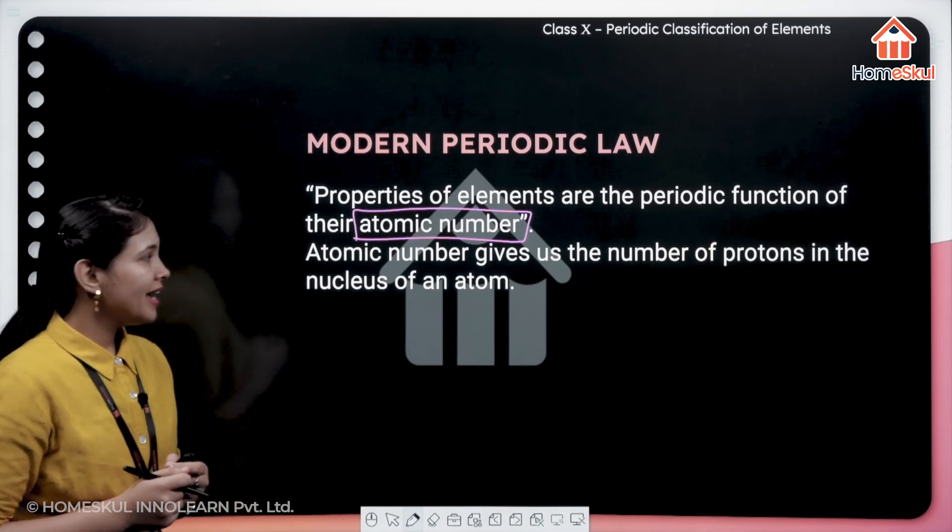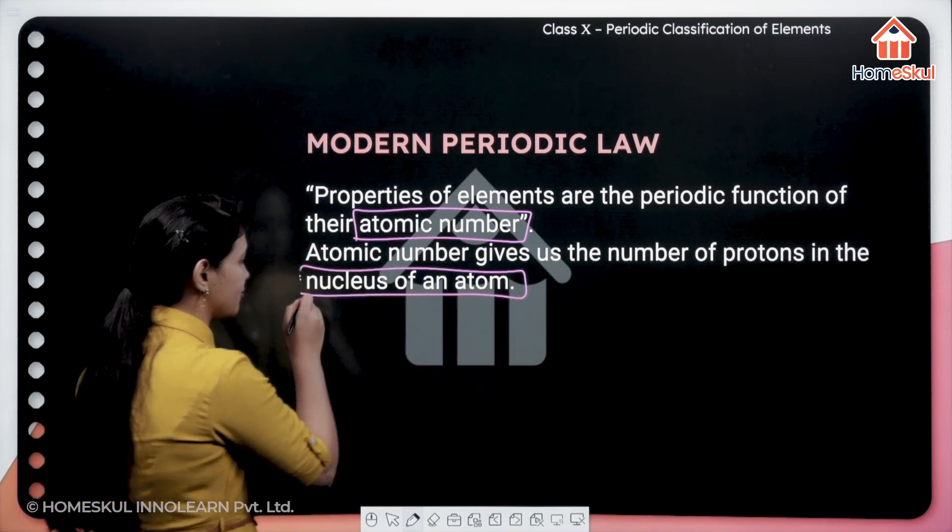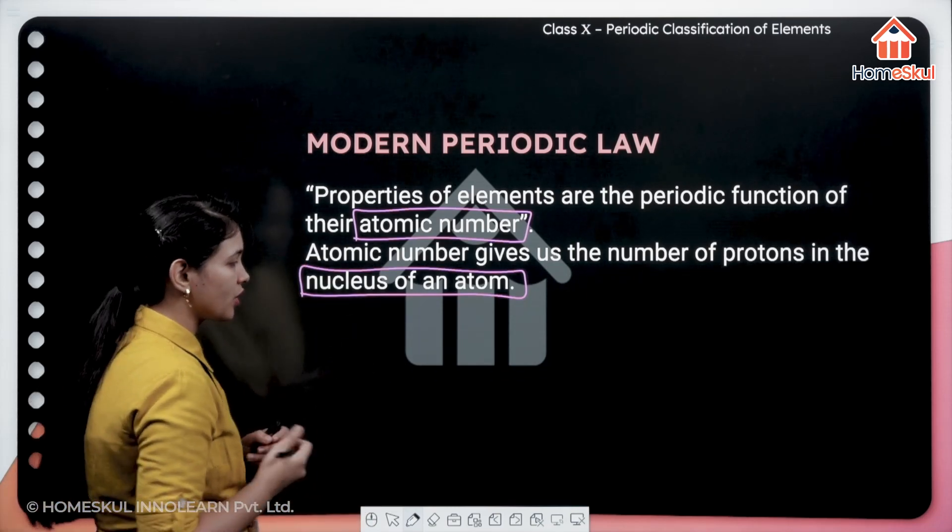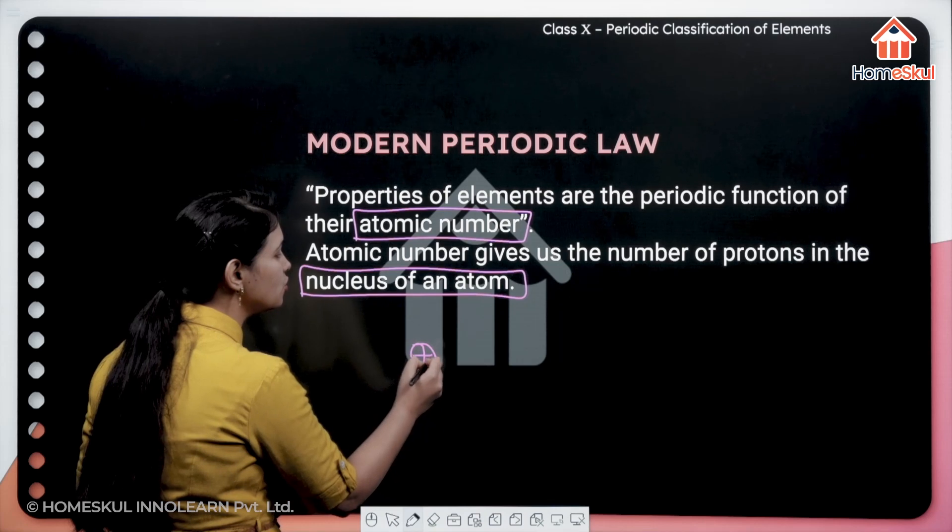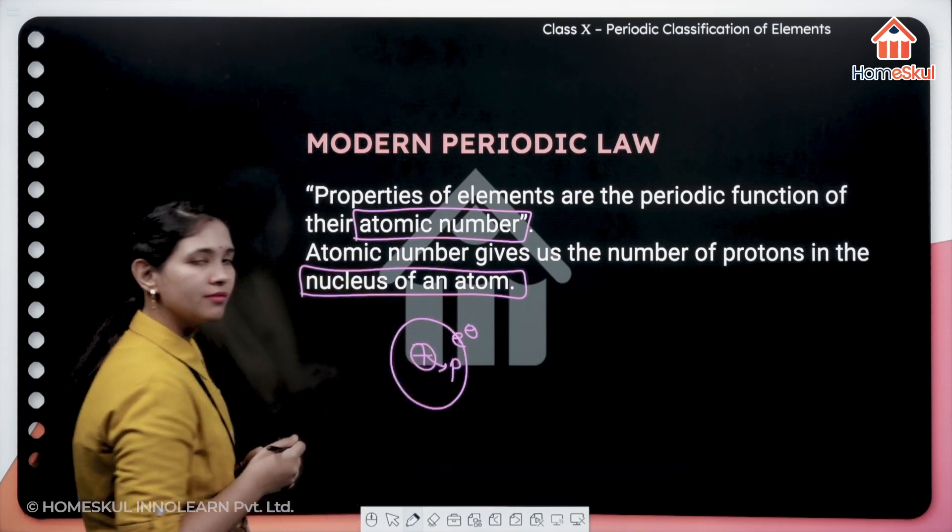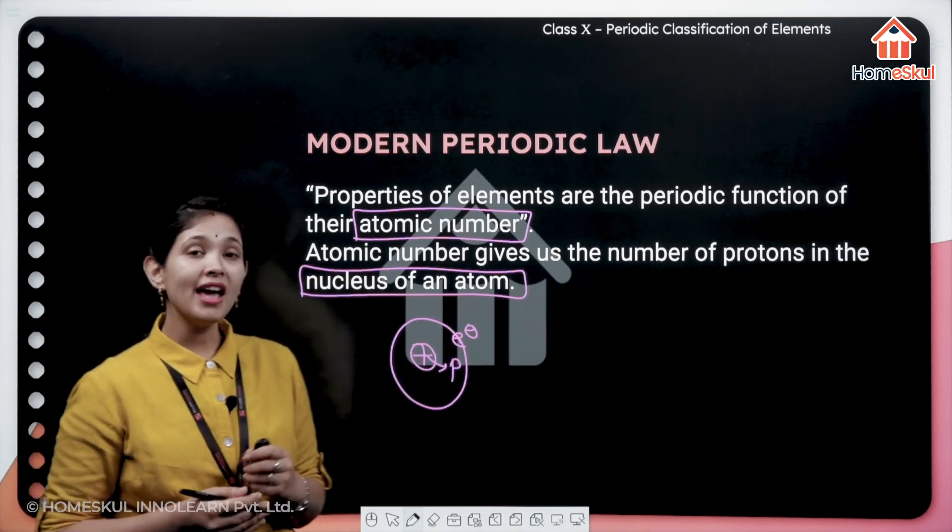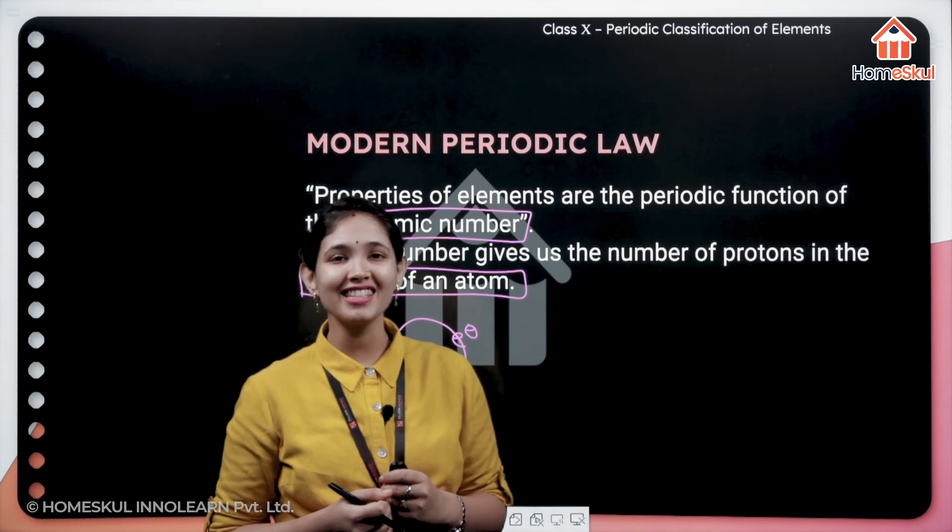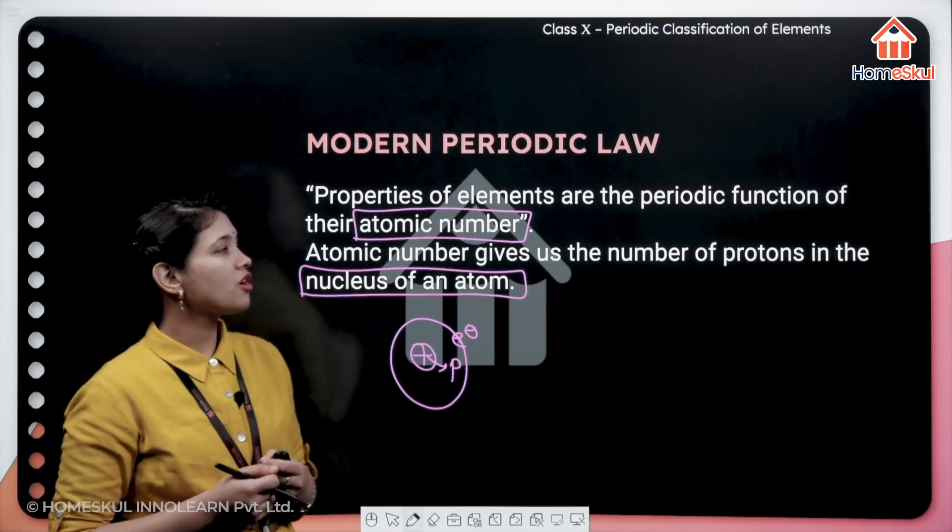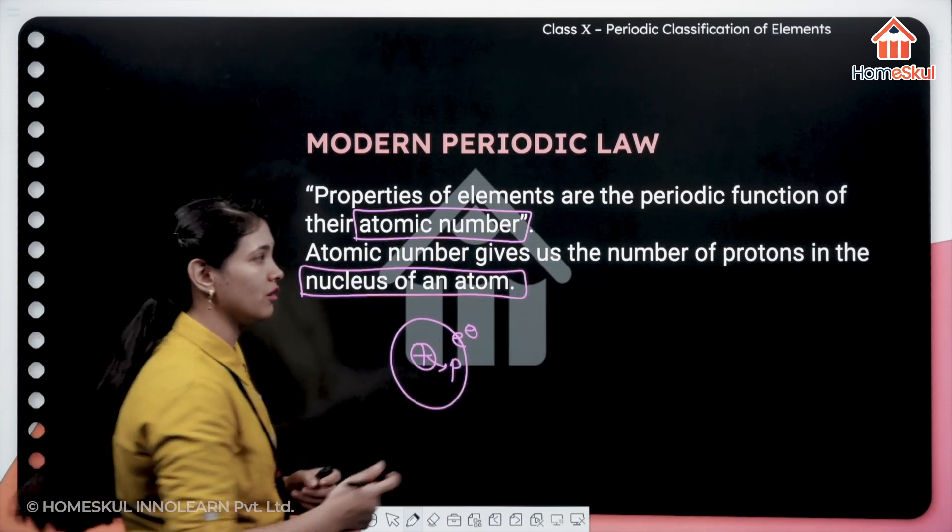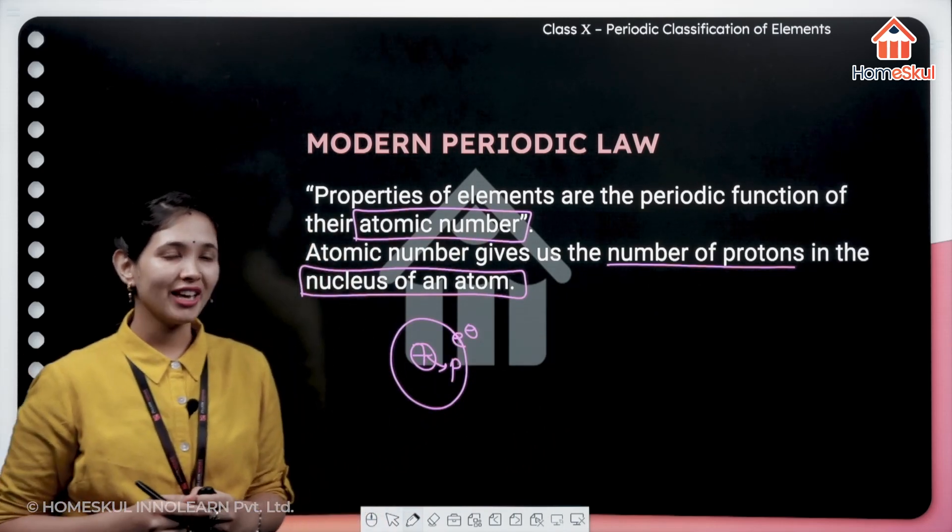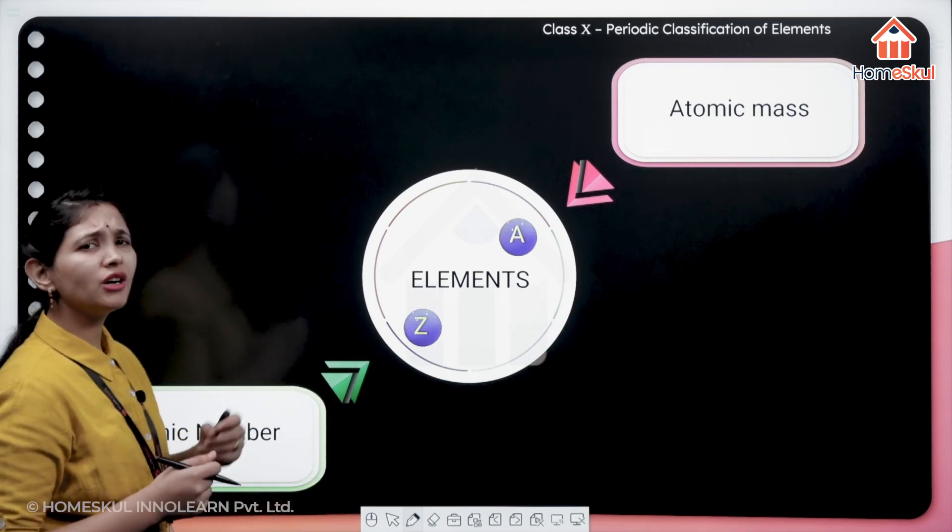Atomic number gives us the number of protons in the nucleus of an atom. As we all know, an atom contains particles. Here is your nucleus, and in the nucleus we have protons, and outer we have electrons. He related the classification of elements with the atomic number, and this atomic number gives you the information of number of protons. So we have to focus on the atomic number.